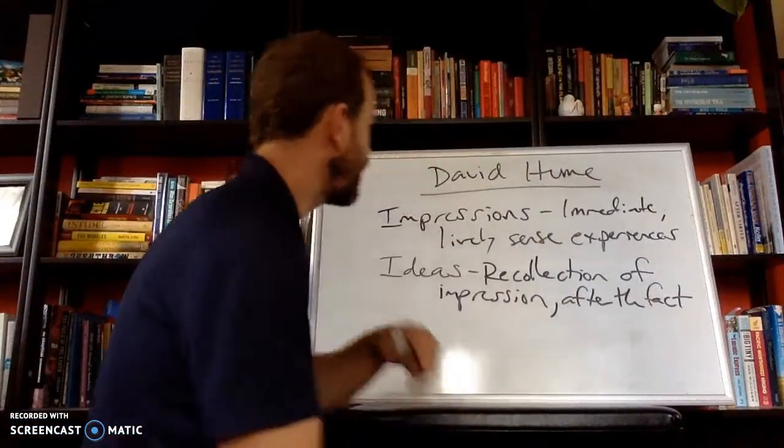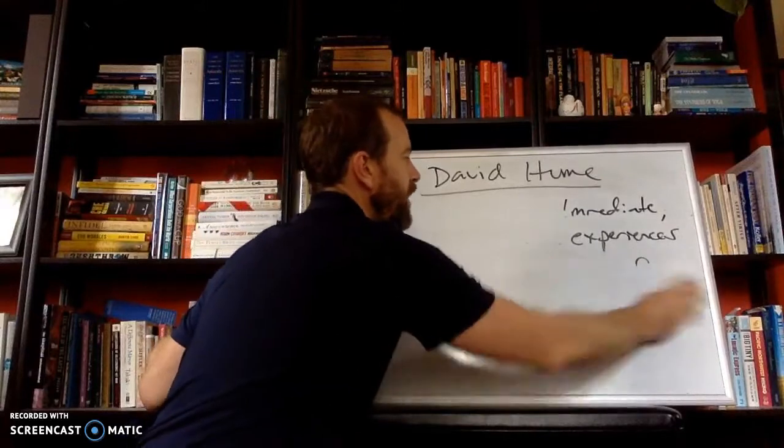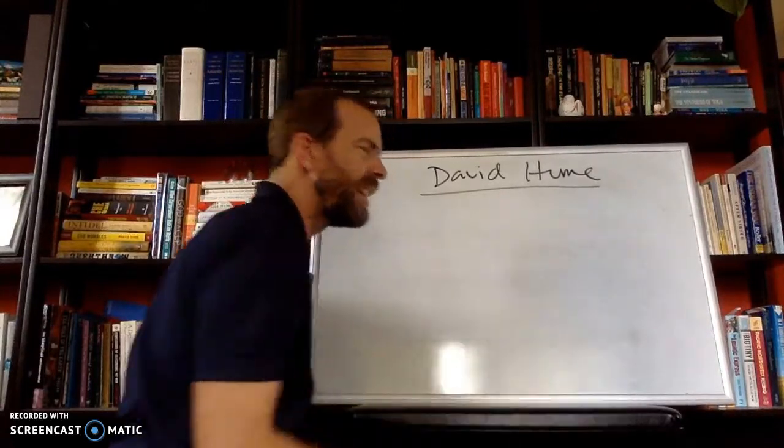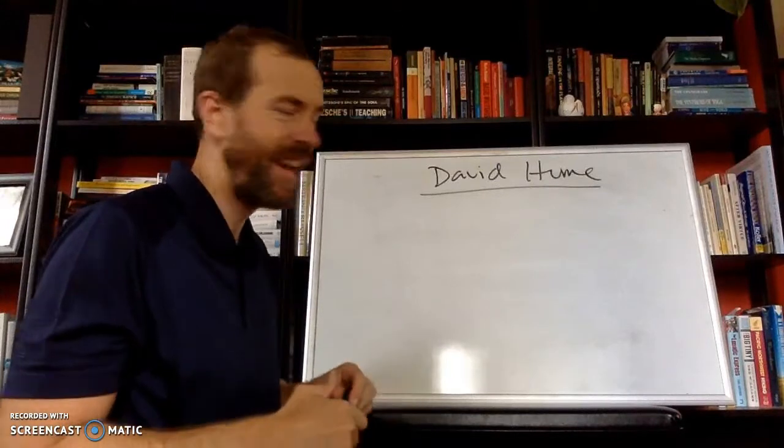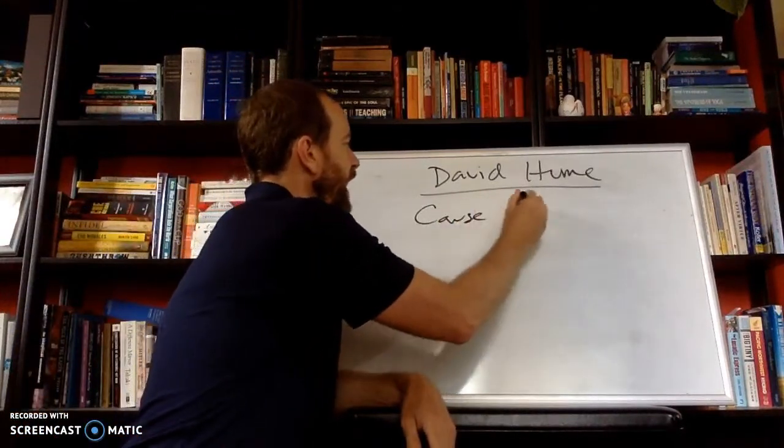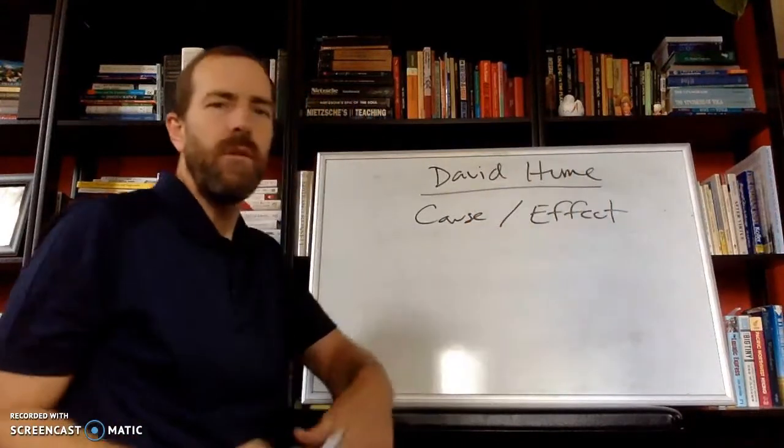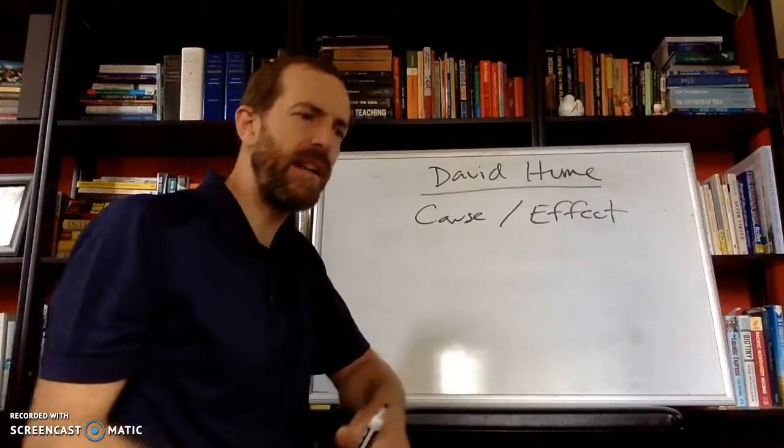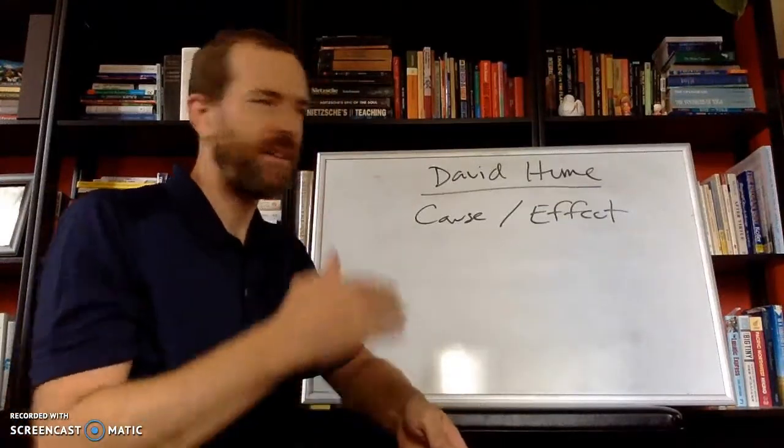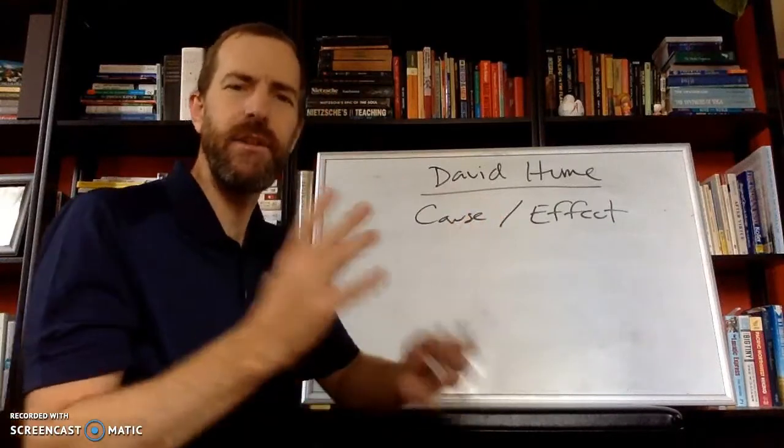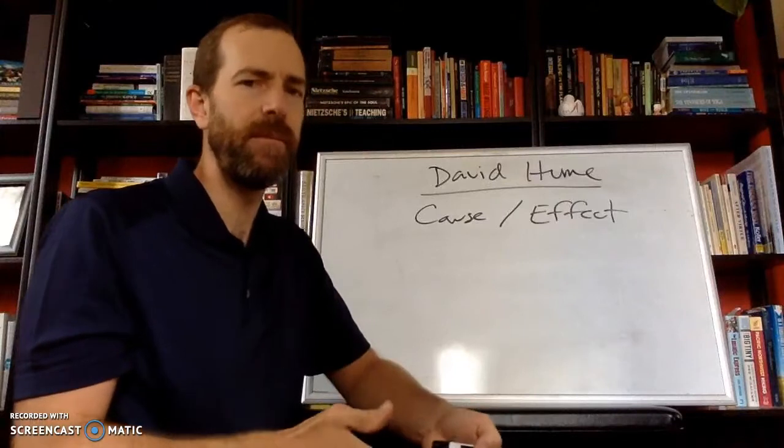And so one example is cause and effect, which you have to believe exists if you're going to believe in Newtonian physics. So cause and effect. We believe that one thing causes another. But David Hume says, trace that back, that idea back to an impression. Well, let's take the example of the billiard table.